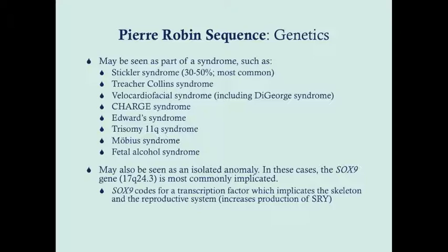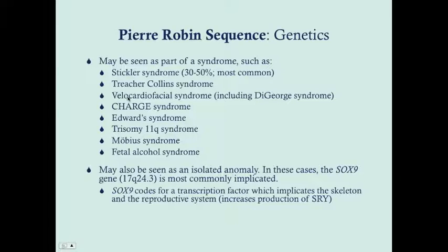The syndromes that can manifest Pierre Robin sequence include a lot. Stickler syndrome is the most common, accounting for 30 to 50 percent of syndromic Pierre Robin sequence cases, and involves joint issues. Others include Treacher Collins syndrome, which is a facial dysplasia; velocardiofacial syndrome, including 22q11 mutations and DeGeorge syndrome with thymic aplasia; CHARGE syndrome; Edwards syndrome; trisomy 11q; Mobius; and fetal alcohol syndrome.